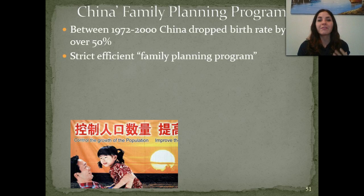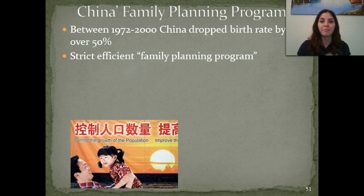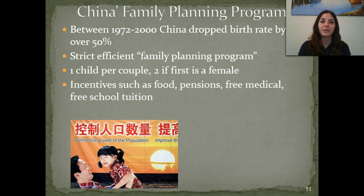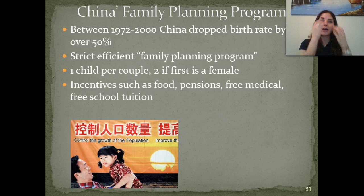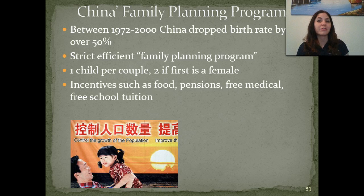China was the exact opposite — they had a very successful family planning program. Between 1972 and 2000, China dropped its birth rate by over 50%. They had an extremely strict and efficient program. There were huge consequences if you had more than one child. They implemented a one-child-per-couple rule, with the caveat that if your first child was female, you had the option to try for a second. They also made it strict as far as who could marry and the age at which you could marry.